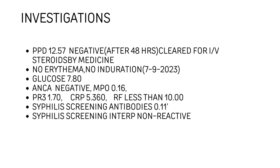We decided to investigate this patient with routine blood work: complete blood count, renal panel, liver function tests, and PPD was done, along with blood sugar level. The results showed that PPD after 48 hours was 12.57 — it was negative. ANCA was also negative; myeloperoxidase 0.16 and proteinase-3 1.70. C-reactive protein 5.3 and rheumatoid factor was less than 10.